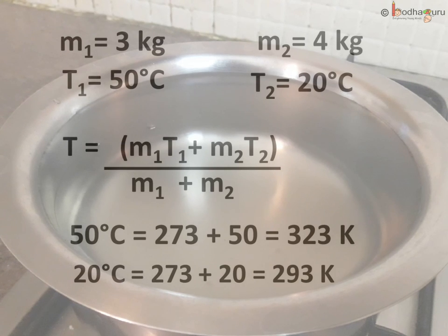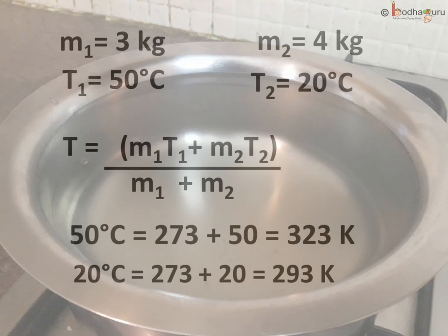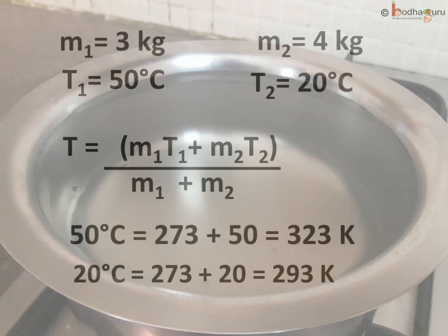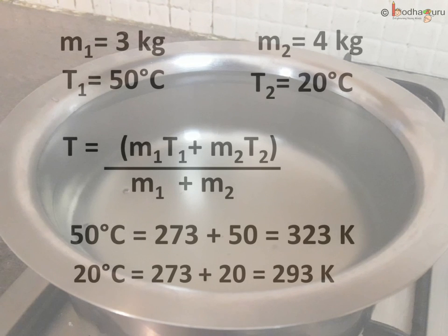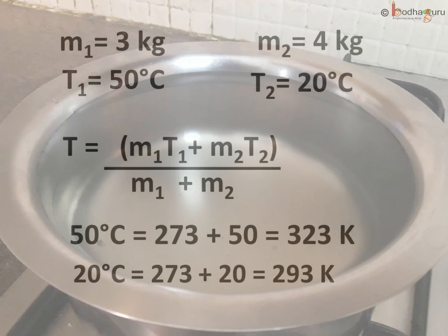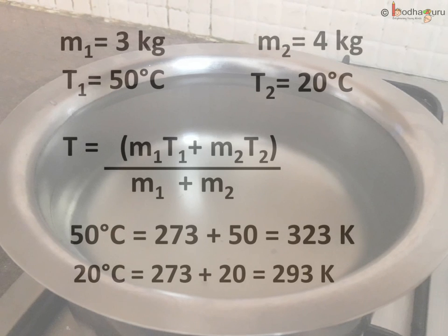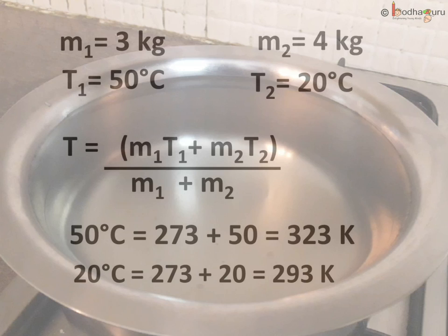If you add 273 to the temperature in degrees Celsius, you would get the temperature in Kelvin. So 50 degrees Celsius equals 273 plus 50, which is 323 Kelvin. 20 degrees Celsius equals 273 plus 20, which is 293 Kelvin.